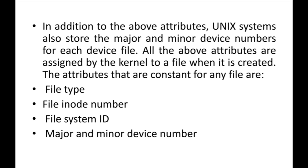All the above attributes are assigned by the kernel to a file when it is created. But the attributes that are constant for any file — meaning common to every type of file — are: file type, file INODE number, and file system ID, along with the major and minor device number for device files. These compulsory attributes will always be present without fail when a file is created.